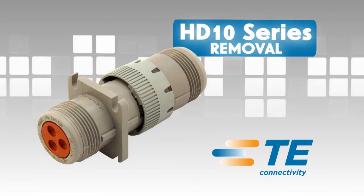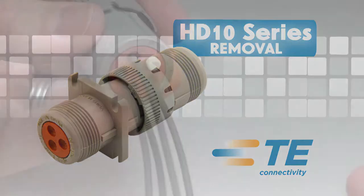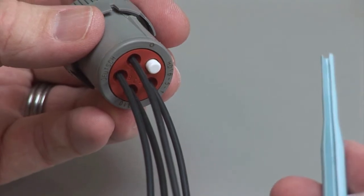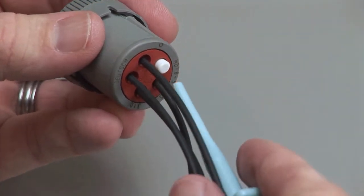HD 10 contact removal. Hold the connector so the rear grommet is facing you. Using the correct size plastic removal tool,